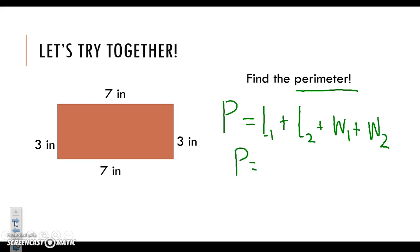So now let's fill in what we have for each of those. Let's start with length 1. Our length is going to be 3 inches. Our length 2 is going to be 3 inches. Our width 1 is going to be 7 inches. And our width 2 is also going to be 7 inches.